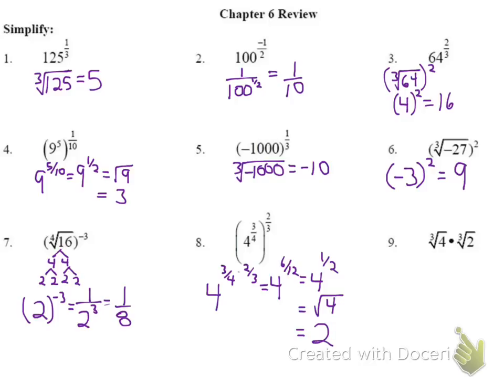Number 9: I have the cube root of 4 times the cube root of 2. We can combine them under one radical since we're multiplying, giving us the cube root of 4 times 2. Since 4 is 2 × 2, that gives us three 2s inside. With the cube root, a set of 3 comes out, so our answer is 2.